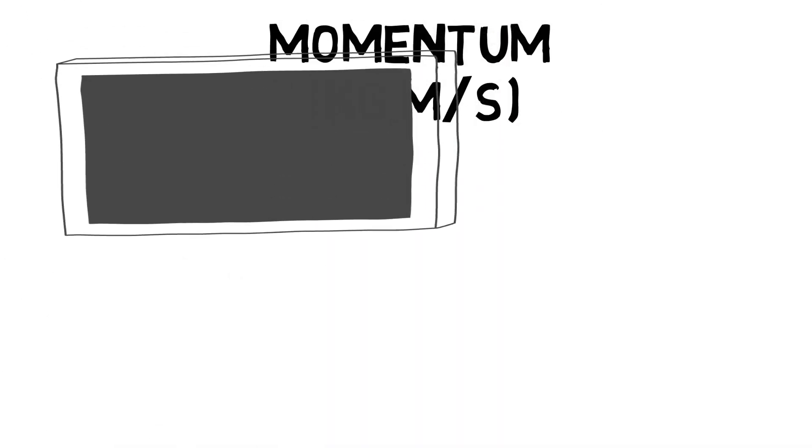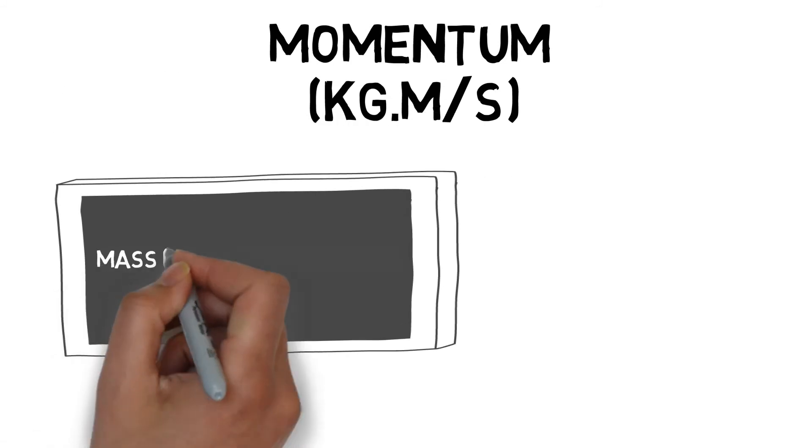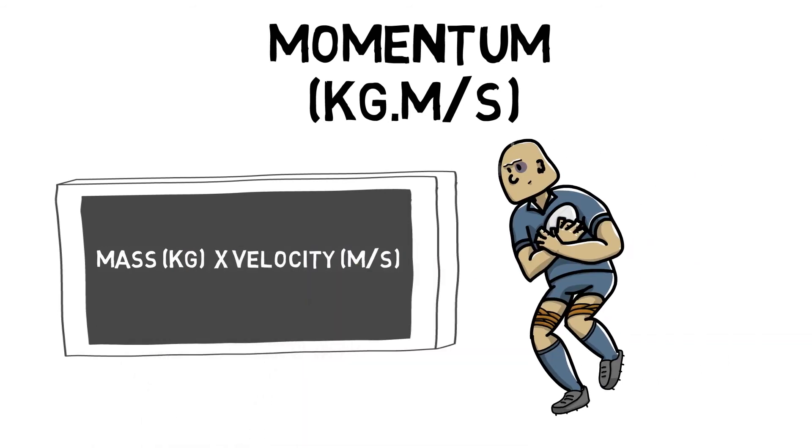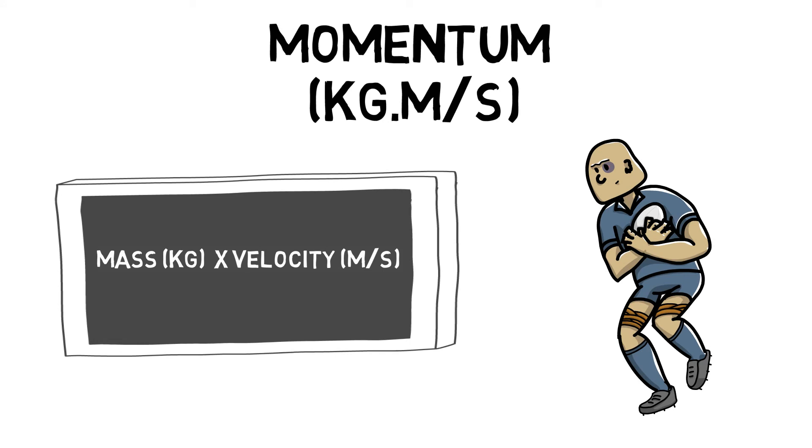Momentum is a concept of the back of Newton's second law, which can be calculated by taking momentum equals mass times velocity. A 100 kilo rugby player, or NFL running back for example, will be much harder to stop running at speed compared to a 50 kilo jockey or marathon runner.